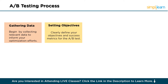After gathering data, the next step is setting objectives. Clearly define your objectives and success metrics for the A-B test. Whether it's increasing clicks on a specific button or driving more product sales, having well-defined goals will enable you to measure the effectiveness of your test variations against the original. Establishing clear objectives ensures that you have a benchmark for success and can accurately evaluate the impact of your experiments.